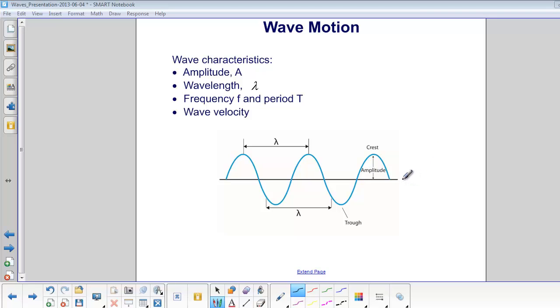The amplitude is from the center, either to the crest or the trough. A crest is the highest point, a trough is the lowest point. Wavelength is one full cycle, which can be measured from crest to crest.